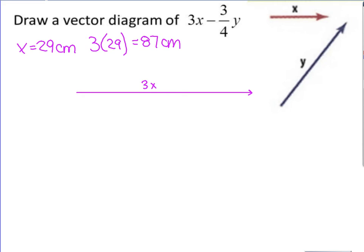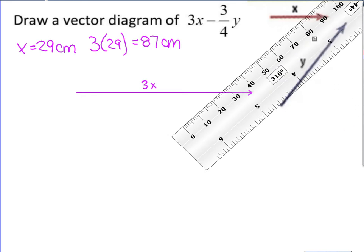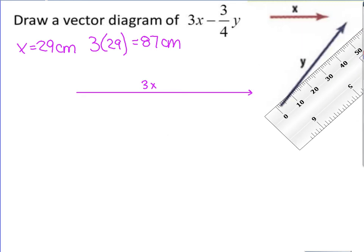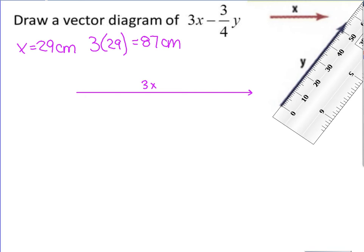Now it says we need to subtract three-fourths y. So the first thing we need to do is measure vector y. Y is about 55 centimeters, and we're finding three-fourths of that value. So 55 times three-fourths is going to give us 41.25 centimeters.